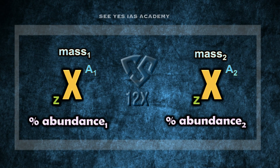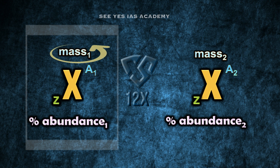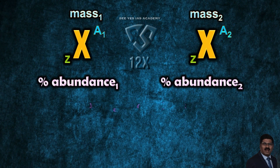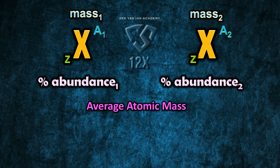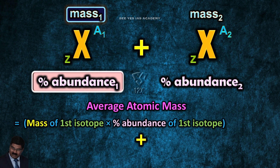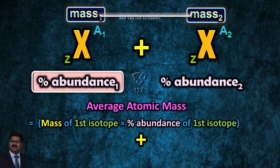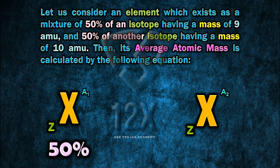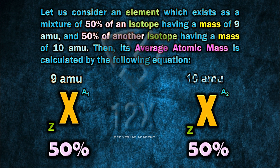Suppose there are two isotopes in an element X having an atomic number Z. The first isotope has a mass of mass 1 and percentage abundance 1. The second isotope has a mass of mass 2 and percentage abundance 2. Let's consider an element which exists as a mixture of 50% of an isotope having a mass of 9 amu and 50% of another isotope having a mass of 10 amu.